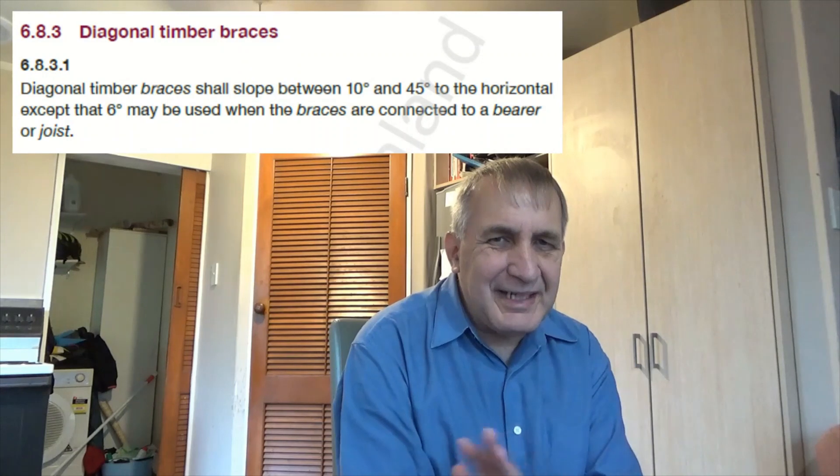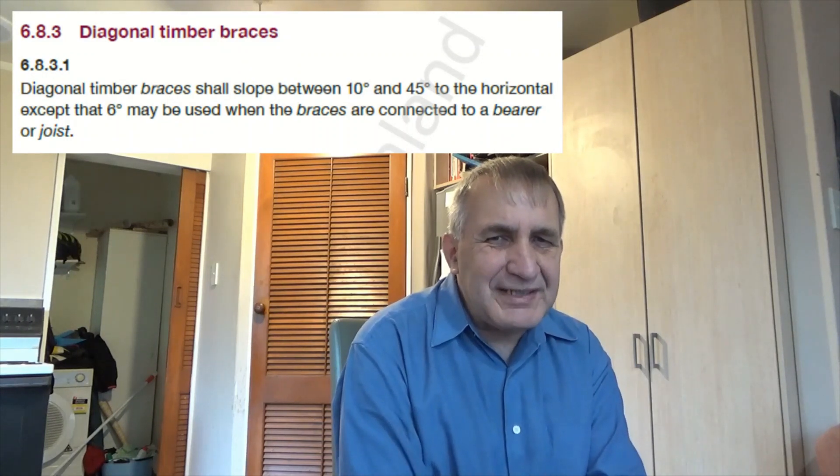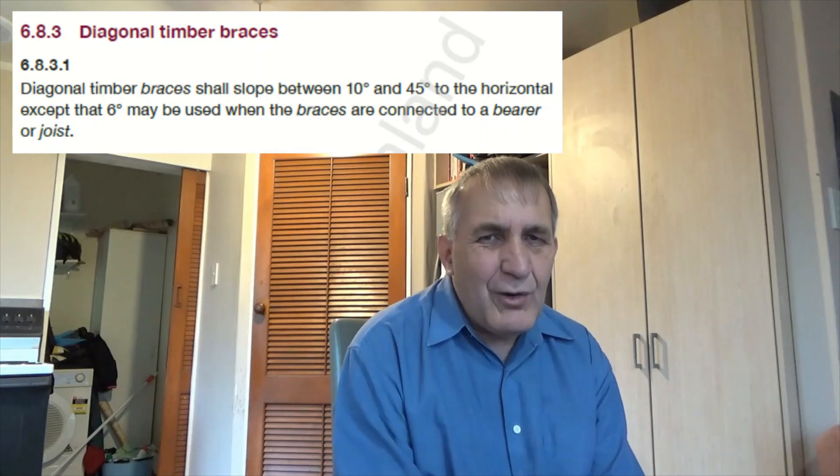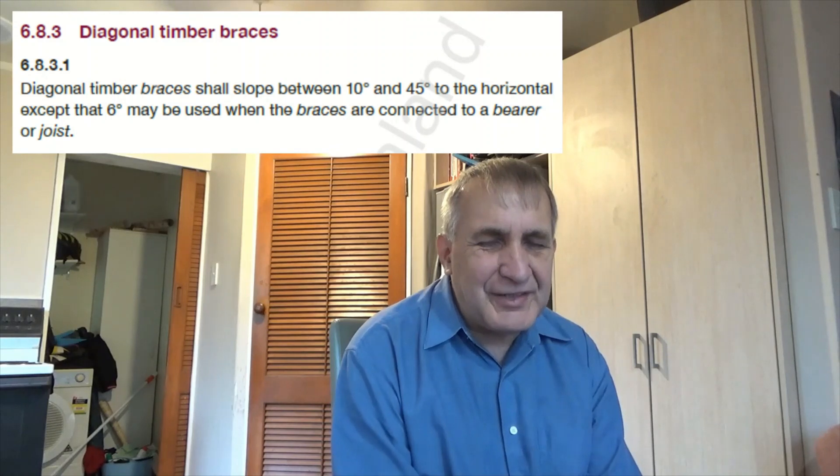There's also another limitation which affects the height of a brace pole. This is the angle of the bracing. This needs to be between 6 and 45 degrees if attached to a joist or a bearer or between 10 and 45 degrees if it's attached to a pile.